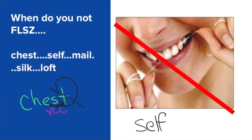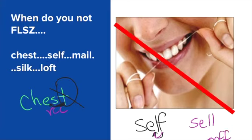'Self' — same thing. It is a one syllable closed syllable, so that E is short. However, the F isn't right next to that E — there's something in the way. The F would have to be right next to the E. 'Male' — it doesn't have a short vowel sound. 'Silk' — it doesn't end in F, L, S, or Z. And 'loft' — again, it doesn't end in F, L, S, or Z.